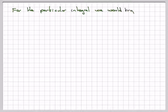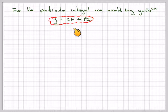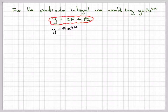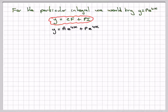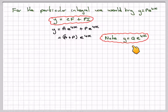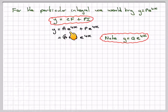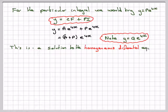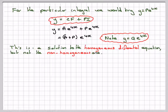For the particular integral, if we use the idea in the table from the previous video, we'll try y equals pe to the 4x. We know that y is made up of the complementary function plus the particular integral. So y equals Ae to the 4x plus pe to the 4x, which becomes (a plus p)e to the 4x — that's of the same format as the complementary function, i.e., y equals qe to the 4x. This is the solution to the homogeneous equation, not the non-homogeneous one.